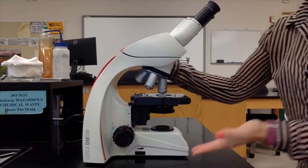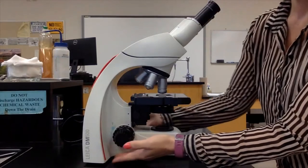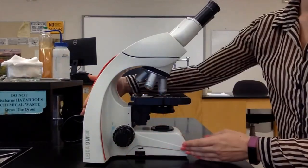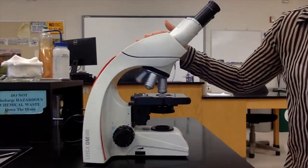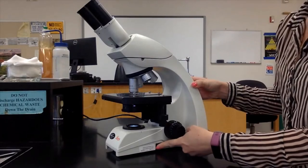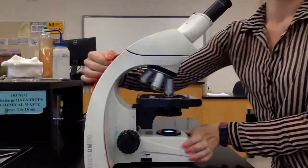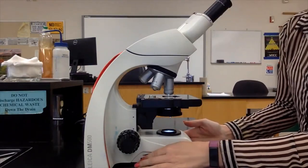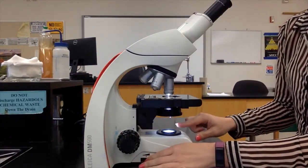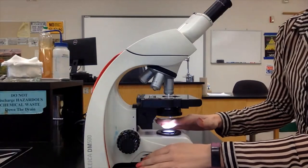As for the parts of this microscope, it also has a base and an arm here. You can see a light switch here and this turn dial is called the rheostat. It controls the amount of light that shines onto your specimen.